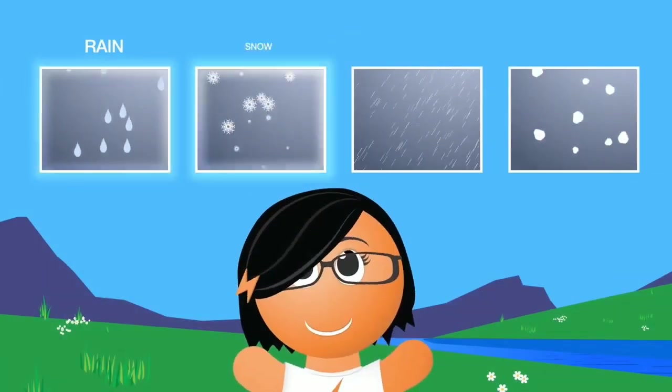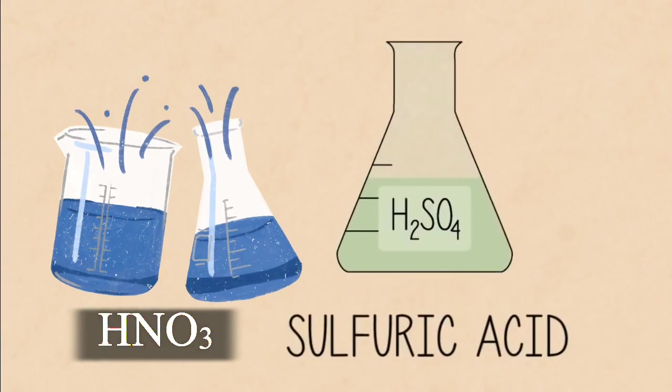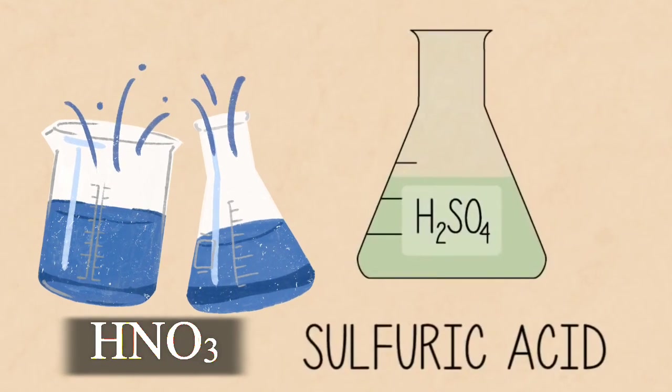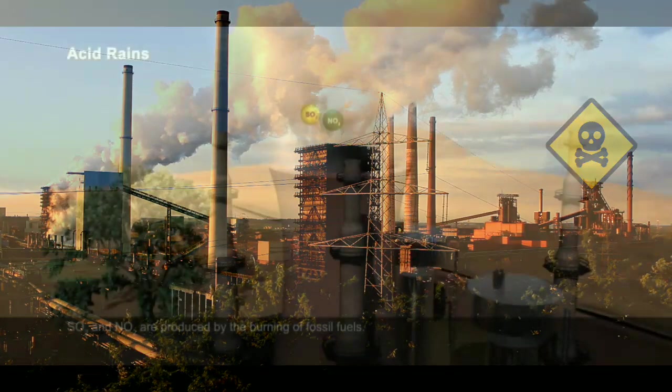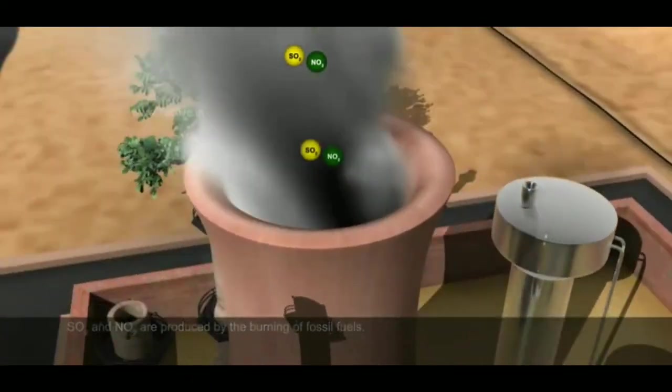Wet deposition is when rain, snow, fog, or mist contains high amounts of sulfuric and nitric acid. Power stations, factories and cars all burn fossil fuels and therefore they all produce polluting gases.